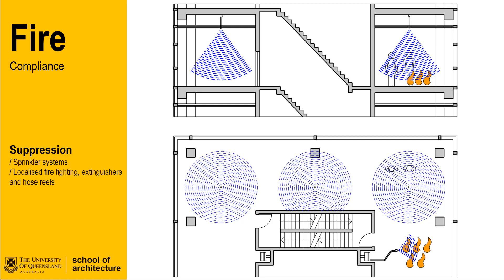Sprinklers are also installed on the outside of buildings to prevent the vertical spread of fires from balconies and up facades. Facade-based systems are often referred to as wall-wetting systems and are used in situations where there is an elevated risk due to the site or project circumstance.